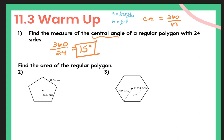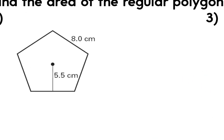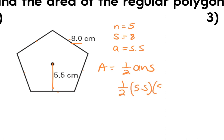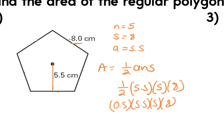Number 2 and 3 is find the area of the regular polygon. For number 2, this is a pentagon, so the number of sides is 5. The length of each side is given — that's 8. And the apothem is also given — that's 5.5. So area equals one-half a·n·s, or one-half times 5.5 times 5 times 8. Multiply that out in the calculator and you get 110 centimeters squared.